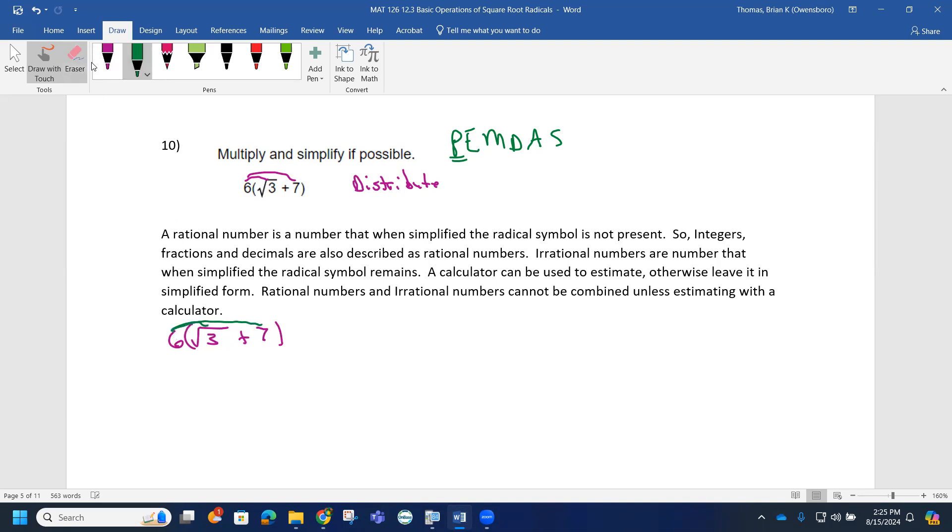Notice how the six is on the outside so it doesn't go inside the radical. The six has to stay outside the radical. So 6 times √3 remains as is, but 6 times 7 can be put together - that's 42. The six cannot be multiplied to the three because the three is still stuck inside the radical, so this stays as 6√3.